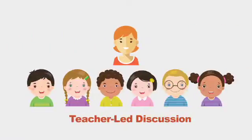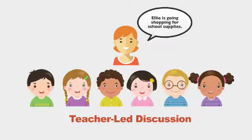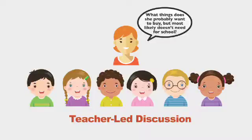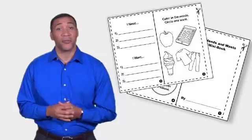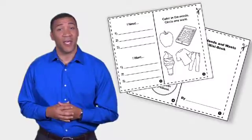The next step in the lesson is prioritizing needs and wants. Start by asking students to imagine someone who is going shopping for school supplies and ask: Ellie is going shopping for school supplies — what items does she probably need to buy? What things does she probably want to buy, but most likely doesn't need for school? Discuss how a student might make choices on the shopping trip.